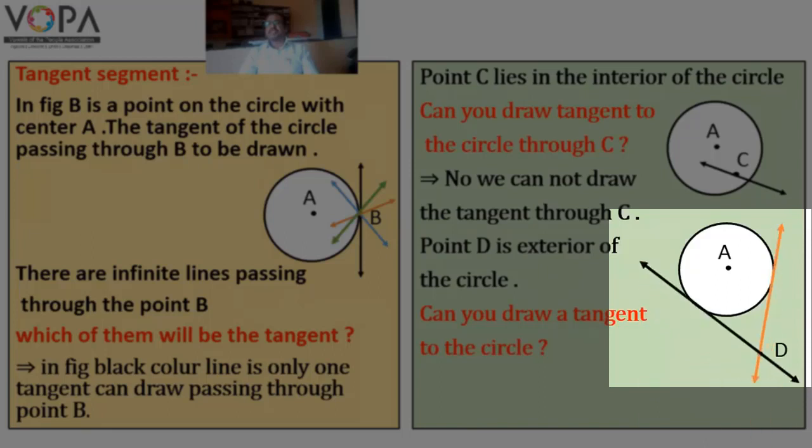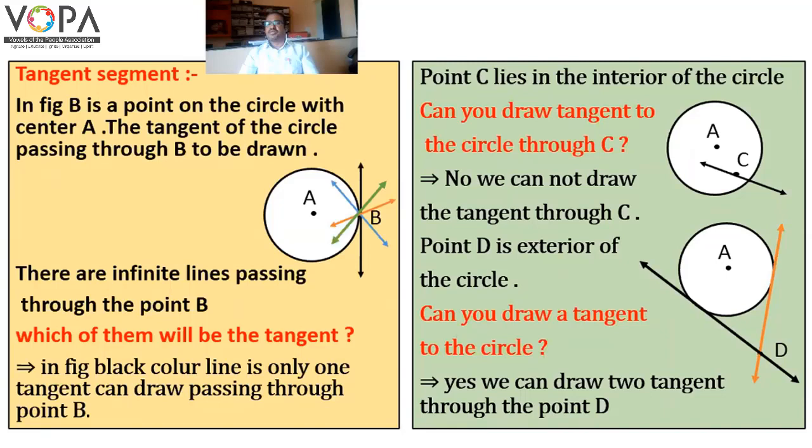Yes, there are two tangents drawn from the exterior point of the circle. We can draw two tangents to the exterior point D.